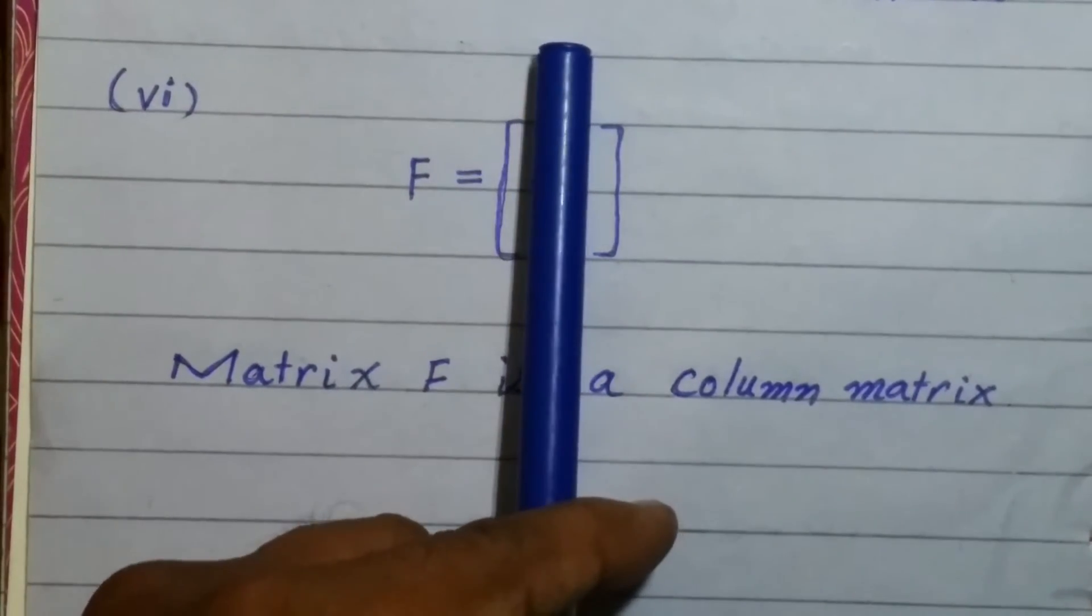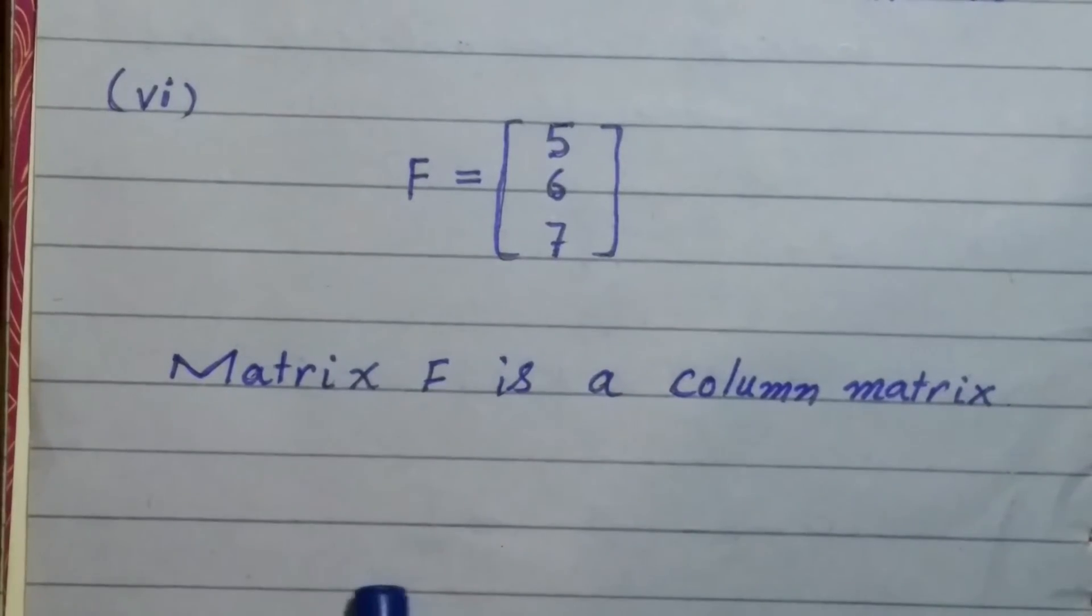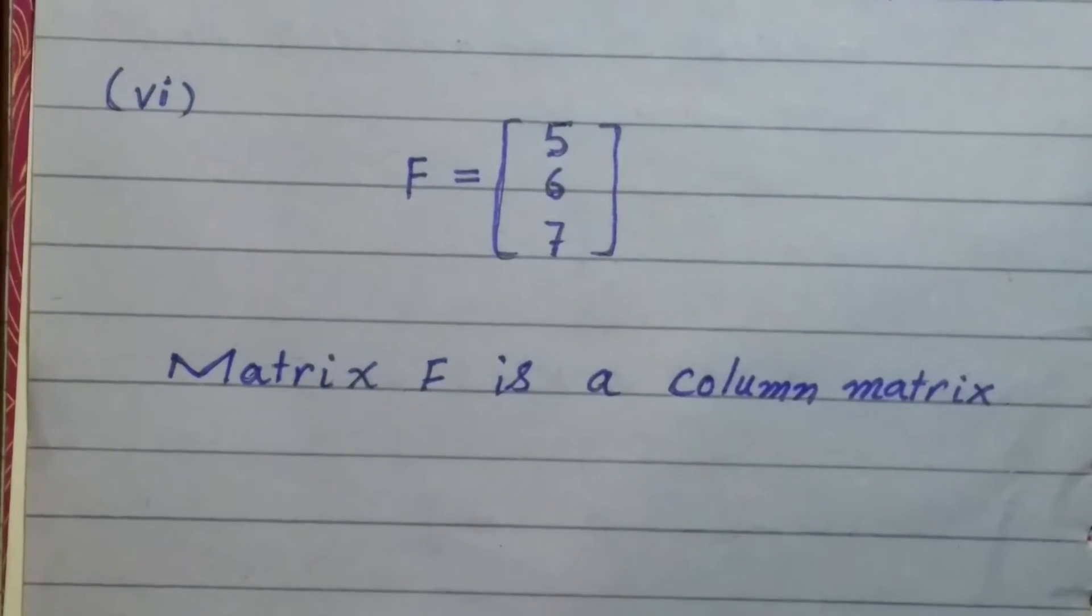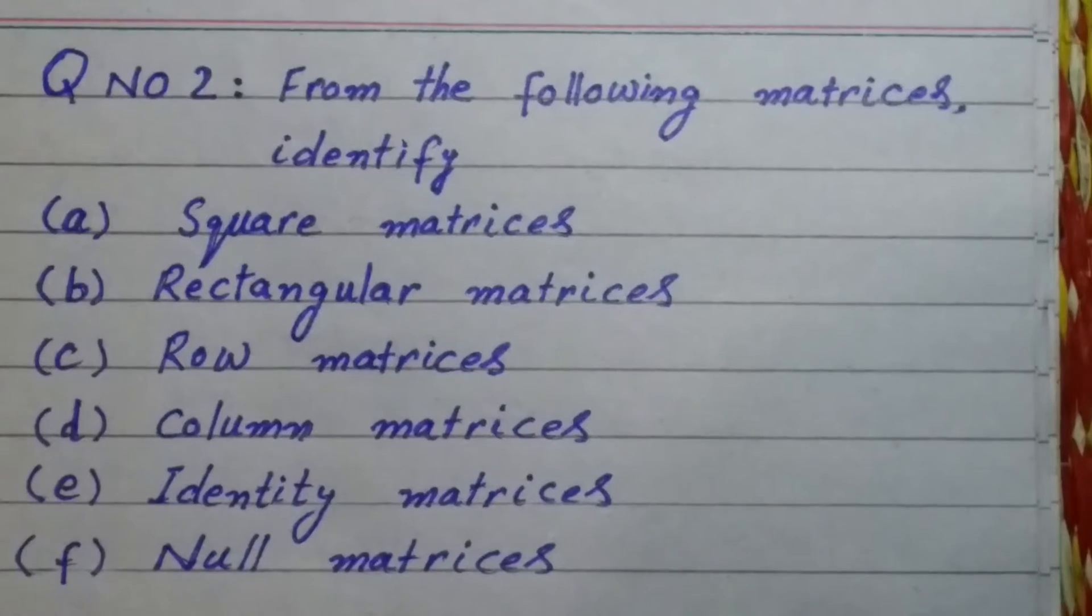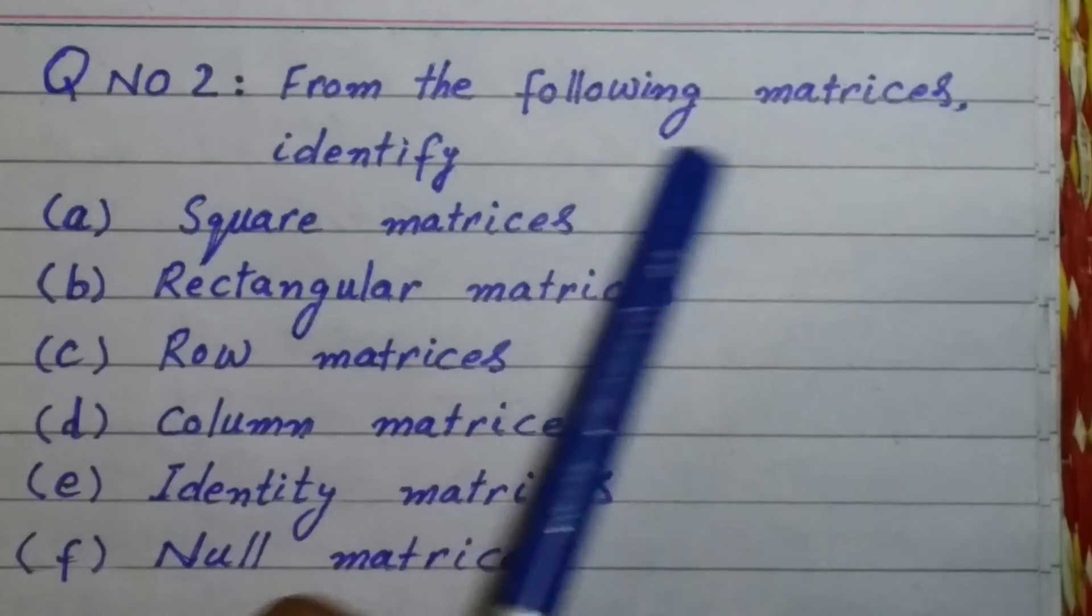Here again, matrix F has only one column, so we can say that it is a column matrix. Matrix F is a column matrix. Now we move to the next question which is question number two.